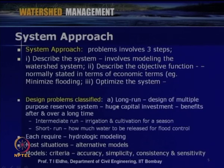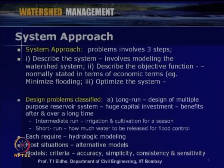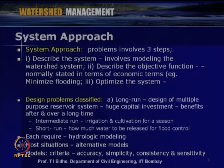The second classification is intermediate run — for a short period like a few months or weeks. For example, irrigation and cultivation for a particular season: knowing storage within the reservoir and planning water release. The third is short-run design problems — for a day, a few days, or few hours — such as how much water to be released for flood control when rainfall is taking place continuously.